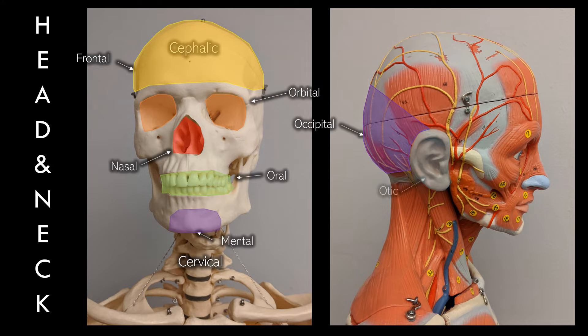The chin, for some unknown reason, is the mental region. The ear is otic, and buccal refers to the cheek — the correct pronunciation is 'buckle,' as confirmed by a dentist, even though it sounds unusual. So it's the buccal region. Moving on to the shoulder and arm: your shoulder blade is the scapula, so the region around the shoulder blade is the scapular region.